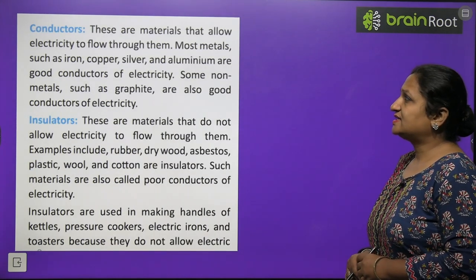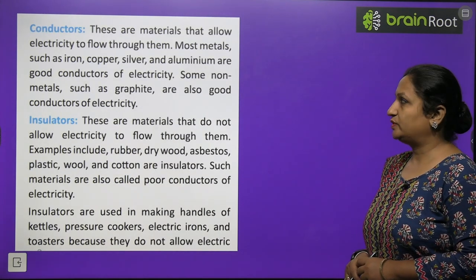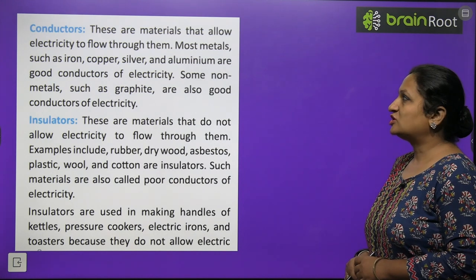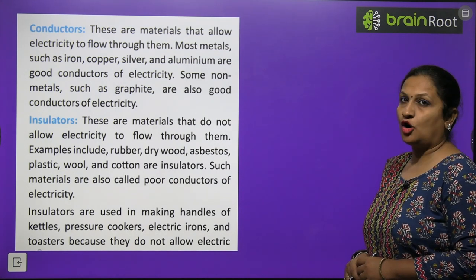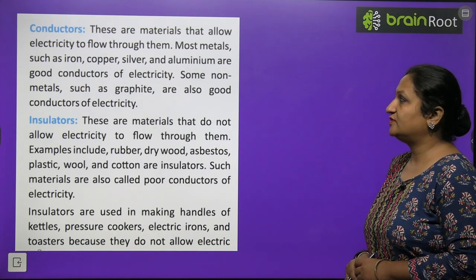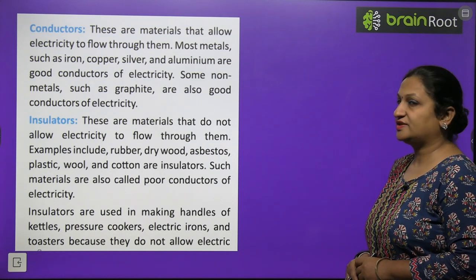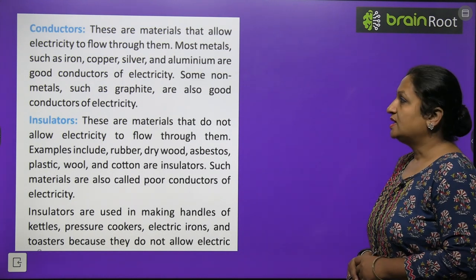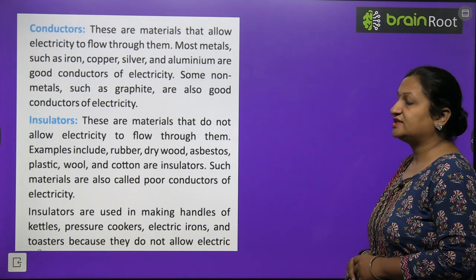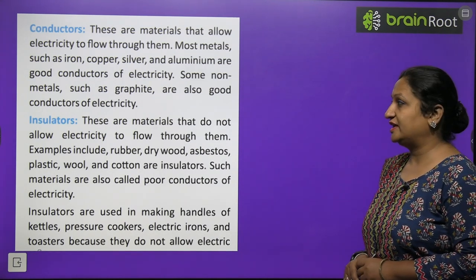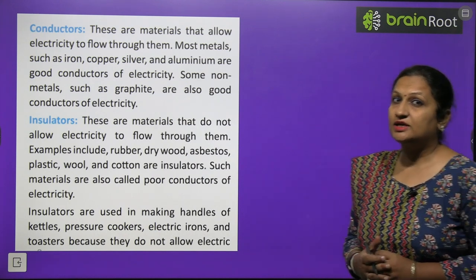Conductors are materials that allow electricity to flow through them. Most metals such as iron, copper, silver, and aluminium are good conductors of electricity. Some non-metals such as graphite are also good conductors of electricity. In fact, graphite is such a good conductor that when we do electrolysis, our electrodes are often made of graphite.